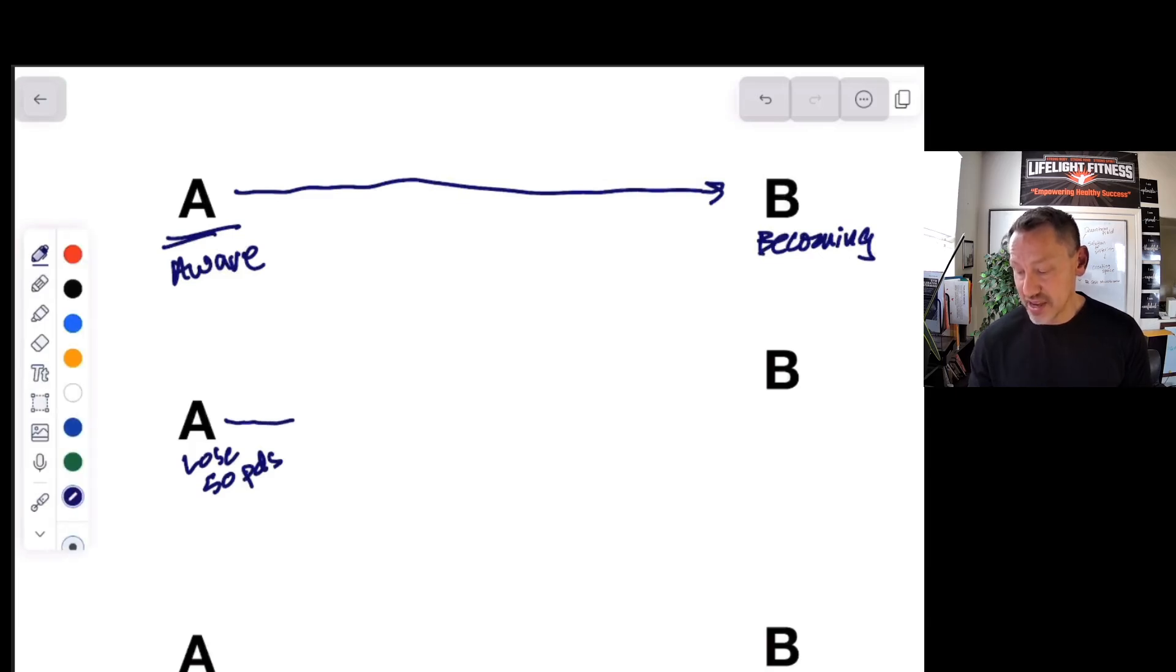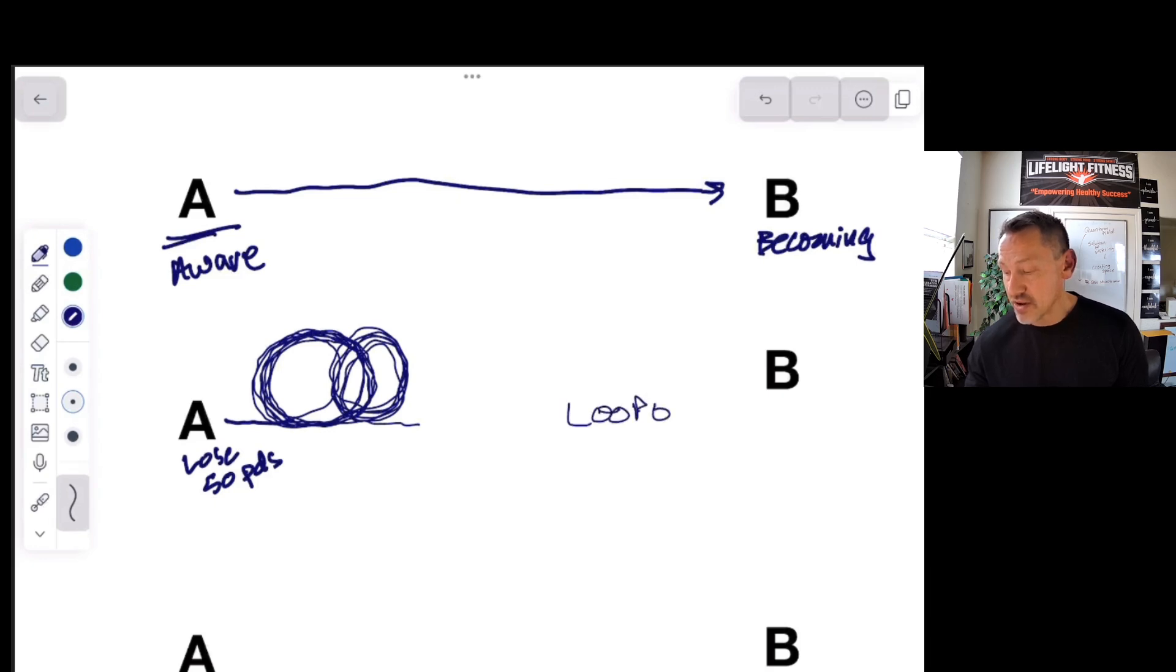Then someone tells us about this new keto or intermittent fasting or paleo, or this new way to do your hormones. And we go on a loop, getting more information. Then we hear about this other way that works even better. And we go on another loop. Then we hear we can do it without even dieting. And we go on another loop. We're stuck in this information loop, just collecting information and not making any progress. These are called the loopers. We never get to point B because we're looping.